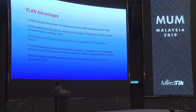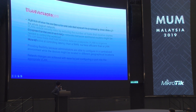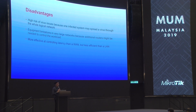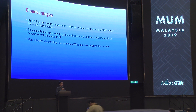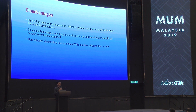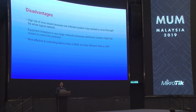The disadvantages: first, there is a high risk of virus spread. If a virus infects a physical network, it will spread into the logical network wherever the physical network is. Second, equipment limitation — because in very large networks, we need many routers to build the VLAN network. VLAN is also less efficient than a flat LAN.